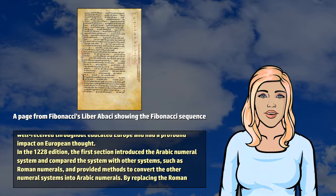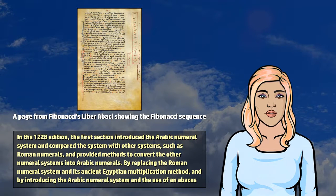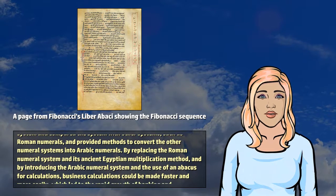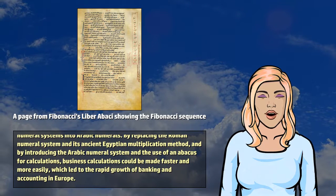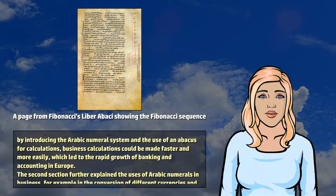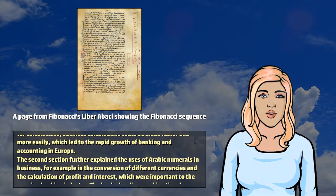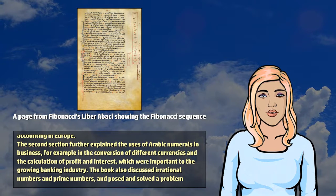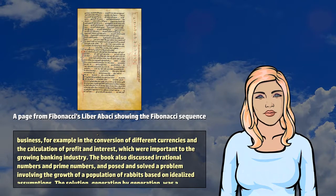In the 1228 edition, the first section introduced the Arabic numeral system and compared the system with other systems, such as Roman numerals, and provided methods to convert the other numeral systems into Arabic numerals. By replacing the Roman numeral system and its ancient Egyptian multiplication method, and by introducing the Arabic numeral system and the use of an abacus for calculations, business calculations could be made faster and more easily, which led to the rapid growth of banking and accounting in Europe. The second section further explained the uses of Arabic numerals in business, for example in the conversion of different currencies and the calculation of profit and interest, which were important to the growing banking industry.